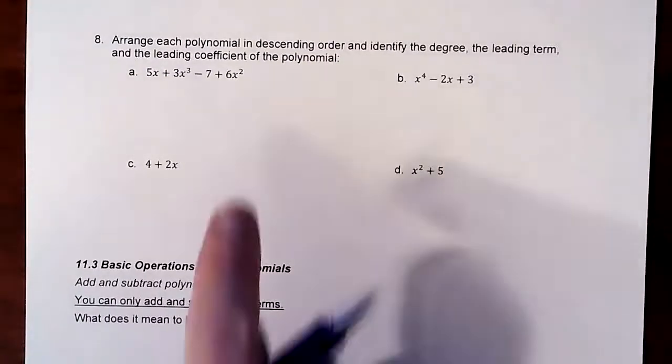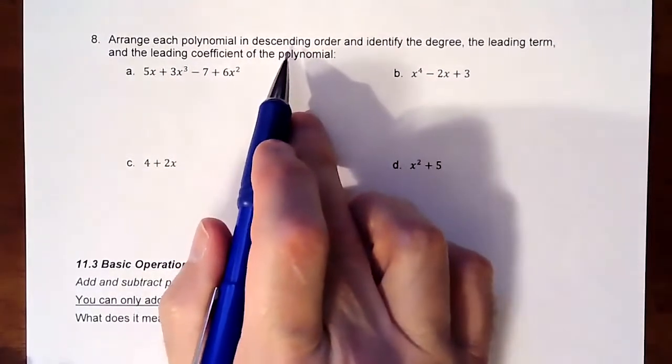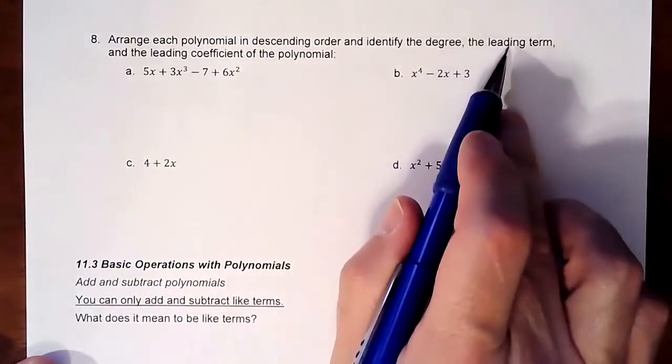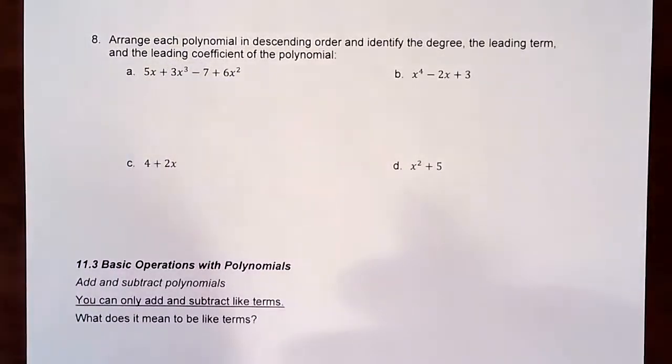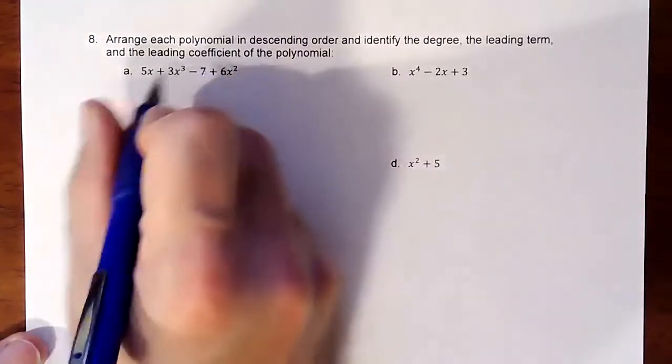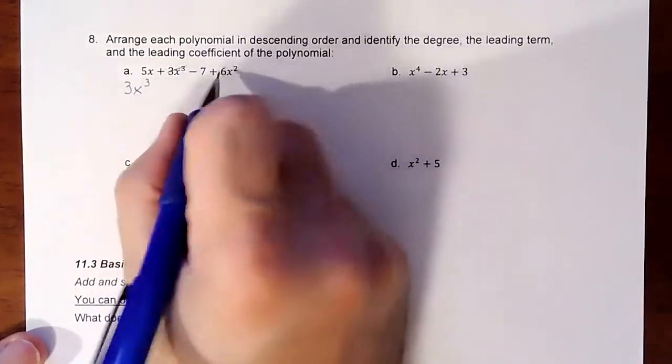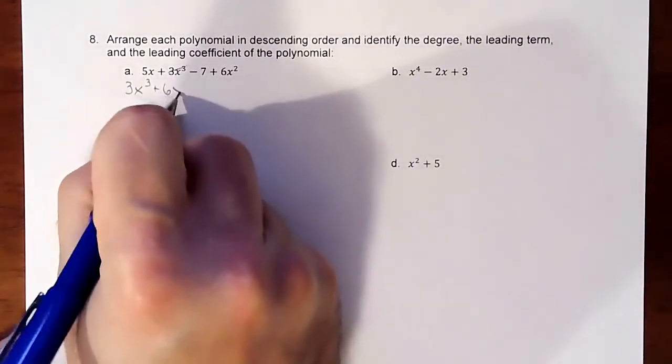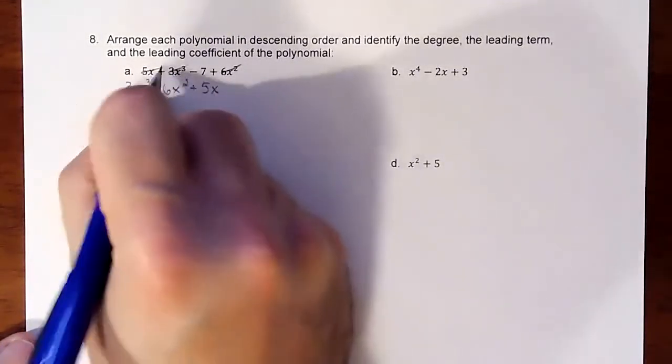Okay, so what does that mean? Well, if we have something like this, it's not in order, and so we just need to put it in order. So we're going to put it in descending order, and we are going to then identify the degree, the leading term, and the leading coefficient in this polynomial. So first thing is, if it's not in order, let's put it in order. So this x to the third is the highest. So we'll throw that in first. I like to cross things off so I know I covered them, and then plus 6x squared, and then plus 5x minus 7.